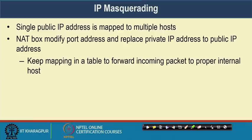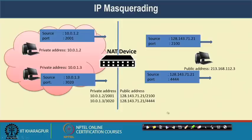Another interesting feature in NAT is something called IP masquerading. What is IP masquerading? It is like having a single public IP address which you can map to multiple hosts. You can actually use the port address along with the IP address to achieve this. This concept is interesting in the context of NAT.